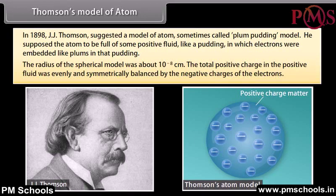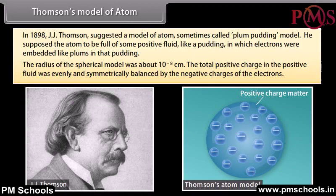The radius of this spherical model was about 10 raised to the power minus 8 cm. The total positive charge in the positive fluid was evenly and symmetrically balanced by the negative charges of the electrons. But this model was discarded because it failed to satisfy the results of experiments performed by Rutherford.